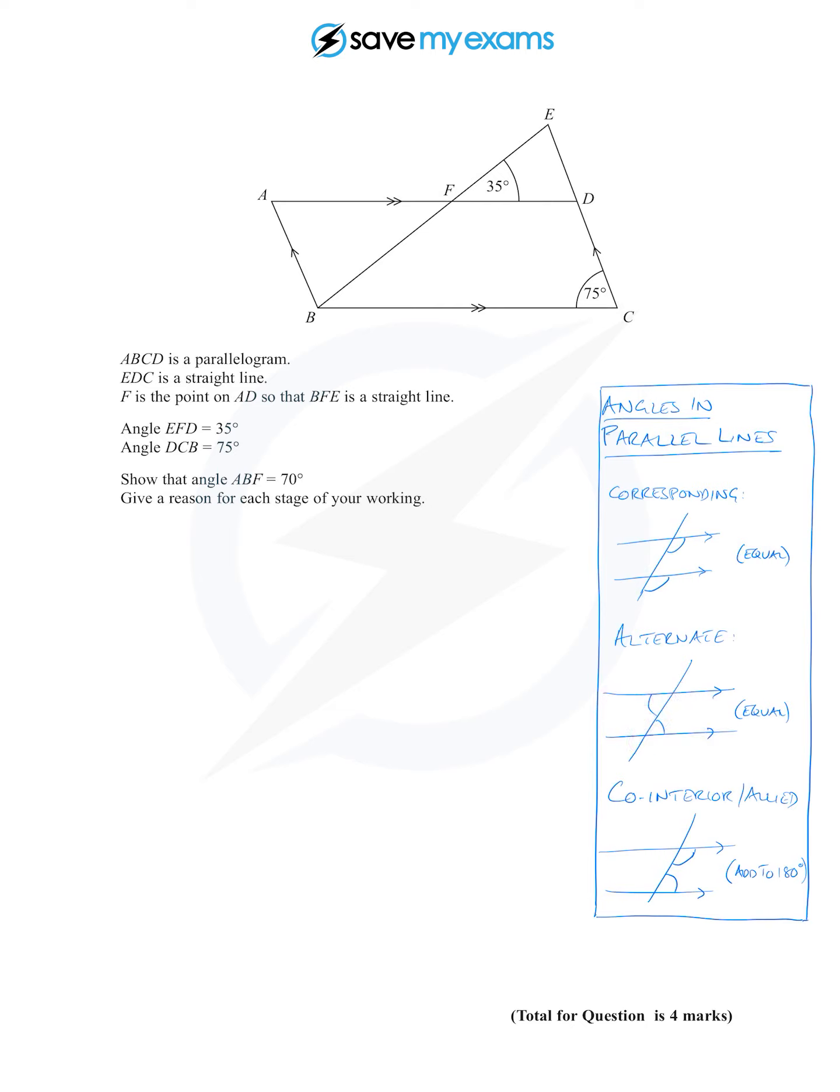And then we have two angles which add up to 180. Those are C angles, sorry, co-interior angles or if you want allied angles, it doesn't really matter. We're asked to find, or rather show, the size of this angle is 70 degrees. That's angle ABF.